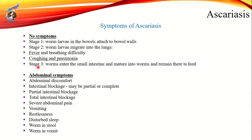In stage three, when the worm is in the intestine and matures, you will get abdominal symptoms: abdominal pain, appetite loss, vomiting, weight loss, nausea, diarrhea, restlessness, disturbed sleep, intestinal blockage, and severe abdominal pain.